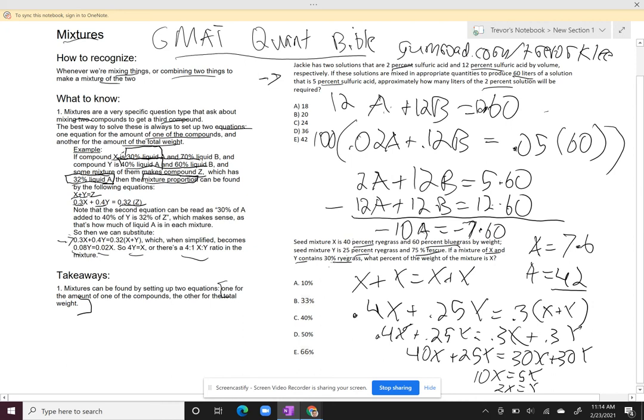Because I have less than 32.5% ryegrass, it's weighted towards seed mixture Y, which means seed mixture X is less. And how much less? It's 33%, right? 2X equals Y. So it's a two-to-one ratio or one-third of the mixture is X.